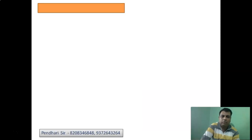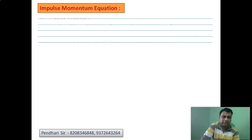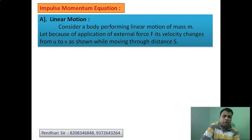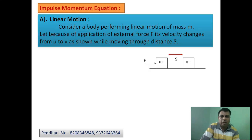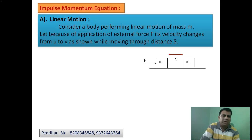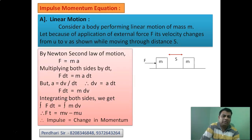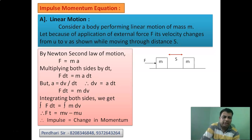Moving further, let us now discuss the impulse-momentum equation for linear motion. Consider a body of mass m; because of applied force F, its velocity changes from u to v over distance s. A block of mass m has force F applied to it, and it moves distance s. By Newton's second law, F = ma. Multiplying both sides by dt gives F·dt on one side and m·a·dt on the other.